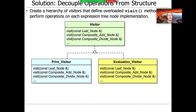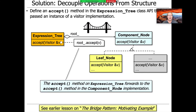What we want instead is to create a hierarchy of so-called visitors, each of which defines overloaded visit methods that know how to perform operations on each expression tree node implementation — each subclass of component node: leaf node, composite add node, composite divide node, and so on. Rather than changing the contents of our expression tree, composite, and bridge abstraction, we'll have visitor classes — a base class called Visitor and subclasses that know how to visit each type of node.